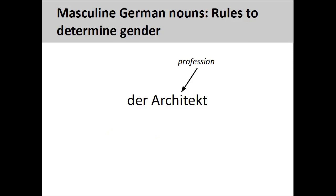As we have seen, nouns designating male beings are masculine. Nouns describing professions, such as 'Architekt' (architect), are masculine. There is a way to form a feminine version of these nouns, which we will explore in a later presentation.